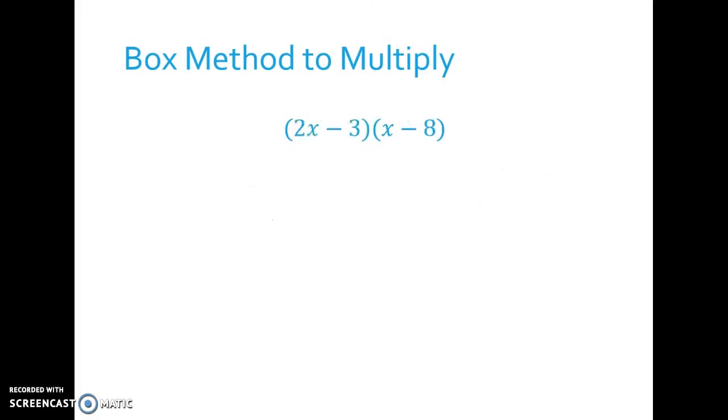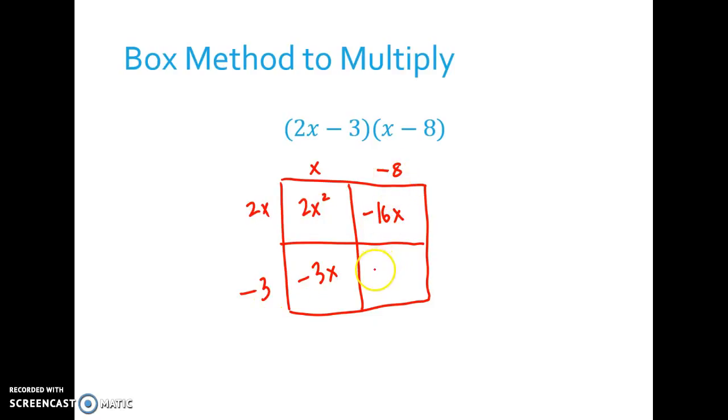You can also do negative numbers when you're doing the box method to multiply. You just have to keep close attention to your signs. This is going to be a 2 by 2 box because 2x minus 3 is a binomial and x minus 8 is a binomial. So notice how I'm keeping the negative sign with the term that it goes with. And then when I find my area it's going to be 2x squared. And then negative 3 times x, so negative 3x. And negative 8 times 2x, so negative 16x. And then negative 8 times negative 3, so positive 24. And then our like terms again are on the diagonal. So then we write in standard form 2x squared minus 19x plus 24.